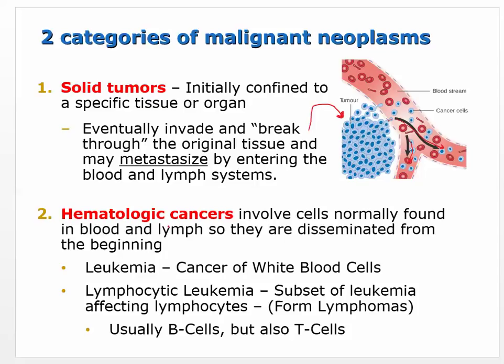Hematologic cancers involve cells normally found in blood and lymph — they are disseminated from the beginning. You can't just remove them. An example is leukemia — leuco meaning white, so these are white blood cell cancers. Lymphocytic leukemias specifically involve B cells and T cells, mostly B cells. Lymphocytes are the B cells and T cells, and they can form what are called lymphomas.